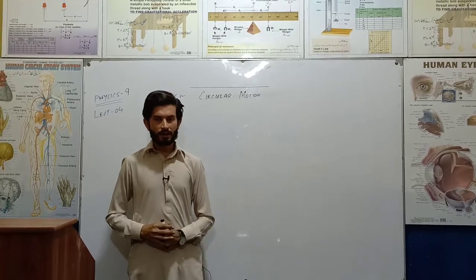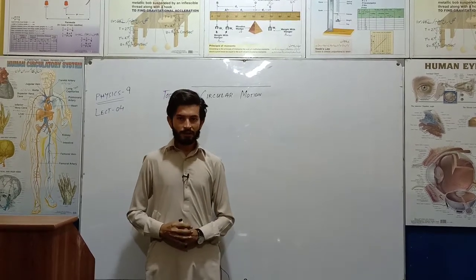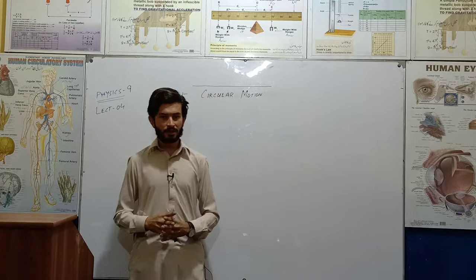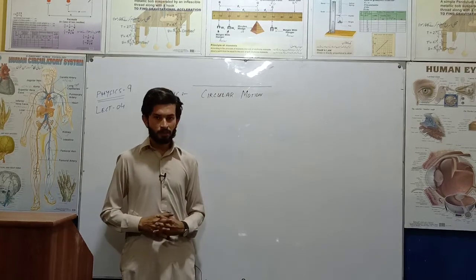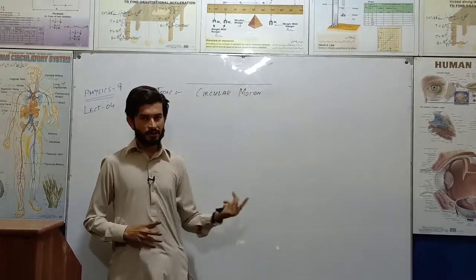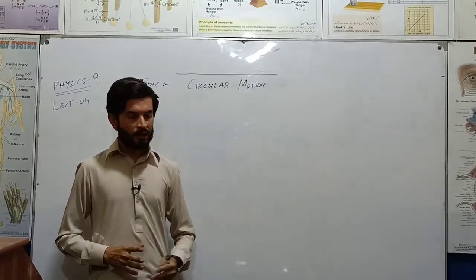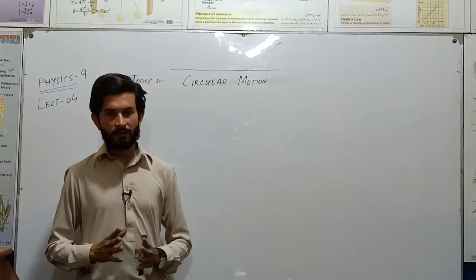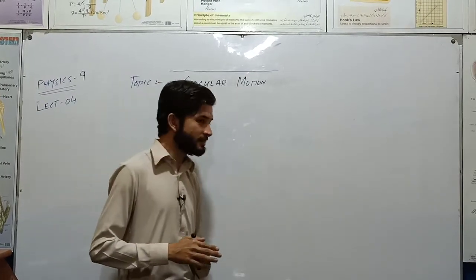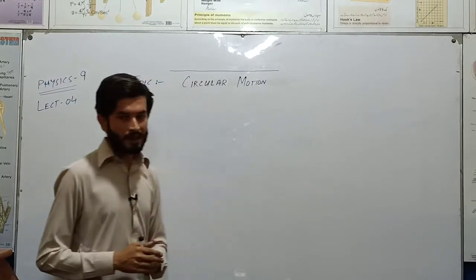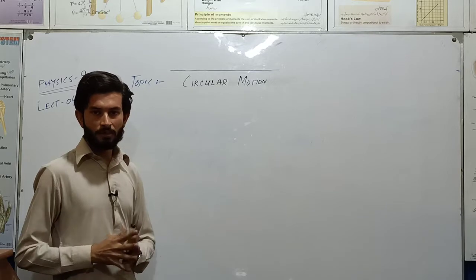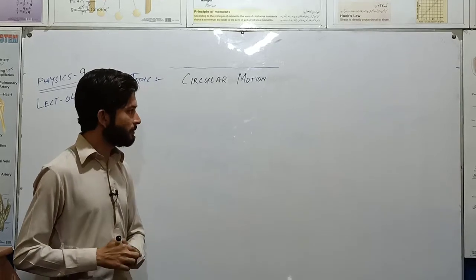Circular motion: if your body moves along the circular path, and the distance from a fixed point remains the same, that is called circular motion.